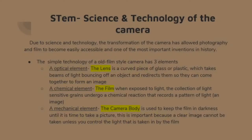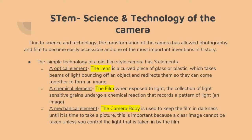Due to science and technology, the transformation of the camera has allowed photography and film to become easily accessible and one of the most important inventions in history. The simple technology of an old film camera has three elements. The first is an optical element — a lens, which is a curved piece of glass or plastic that takes the beams of light bouncing off an object and redirects them so they come together to form an image.